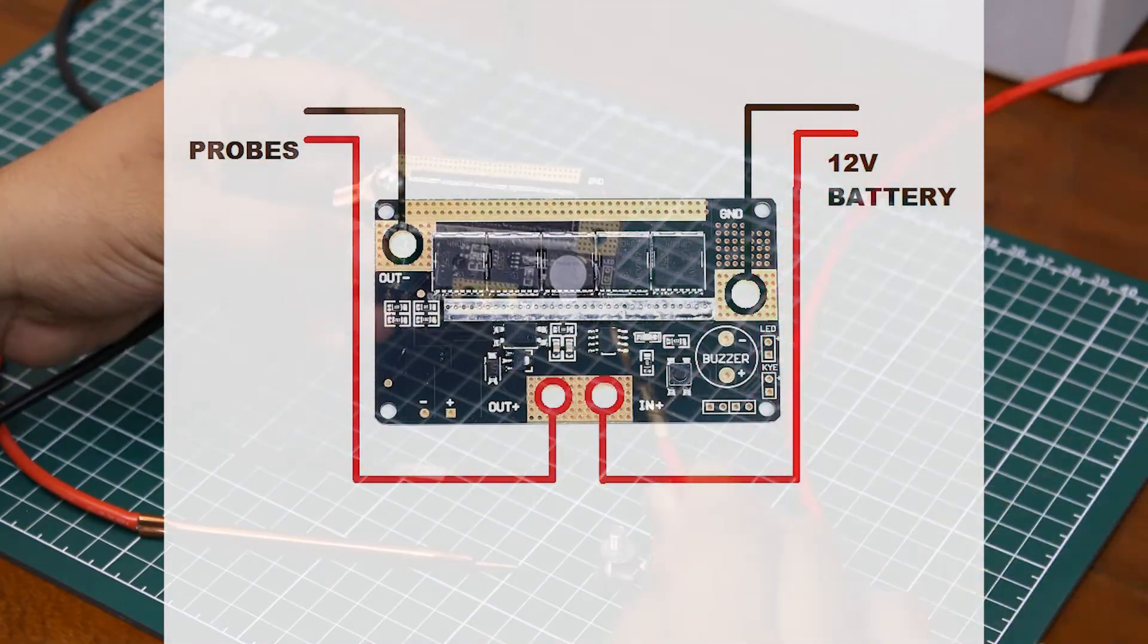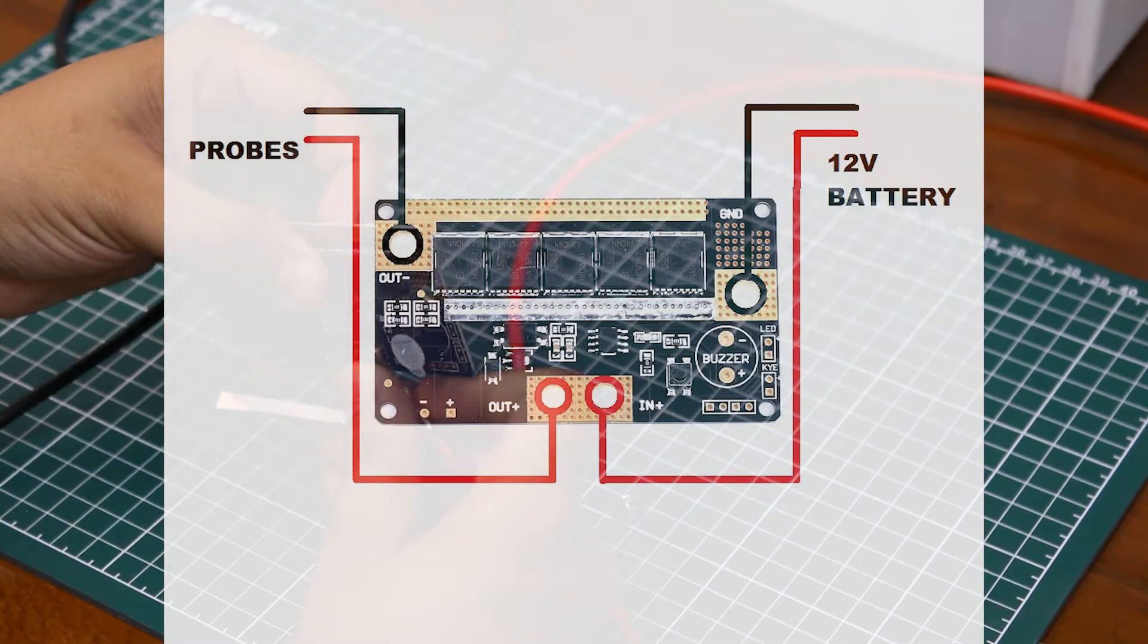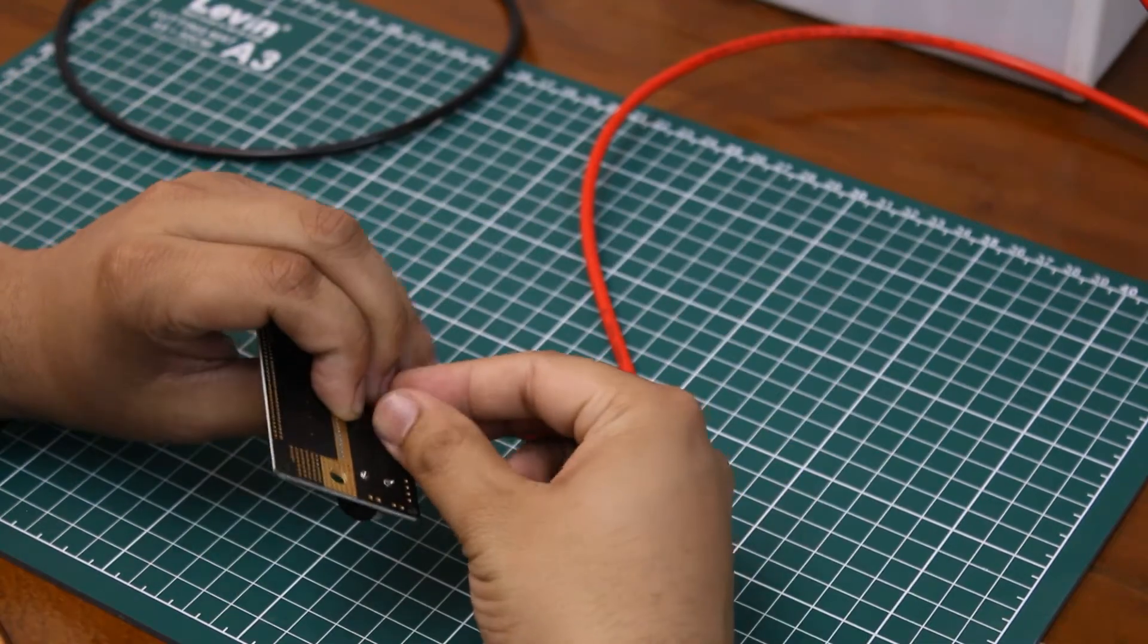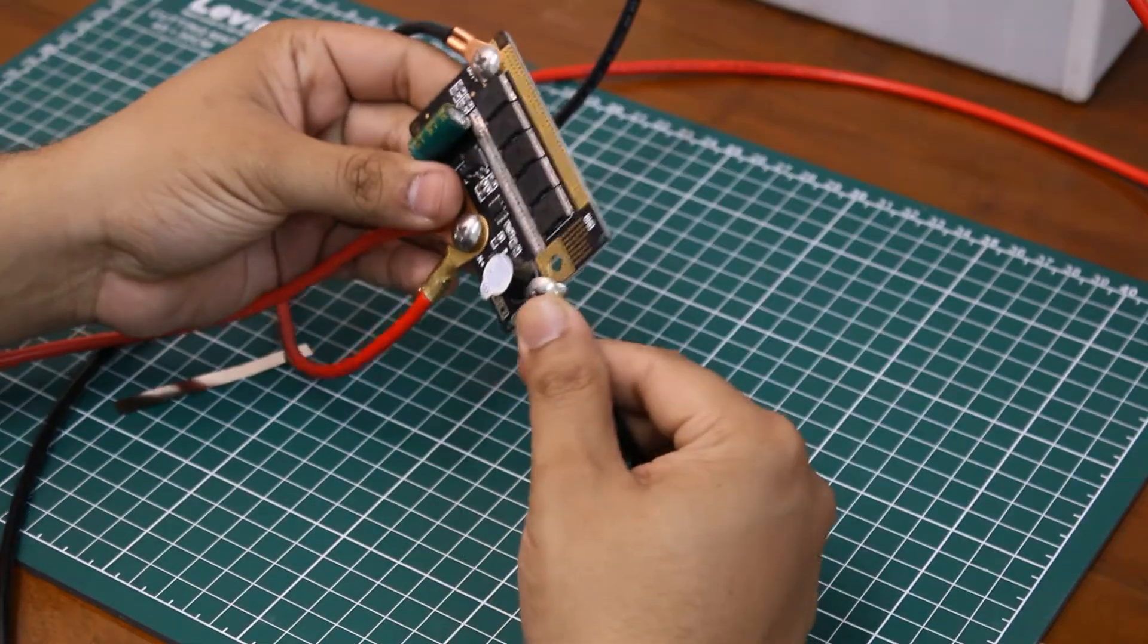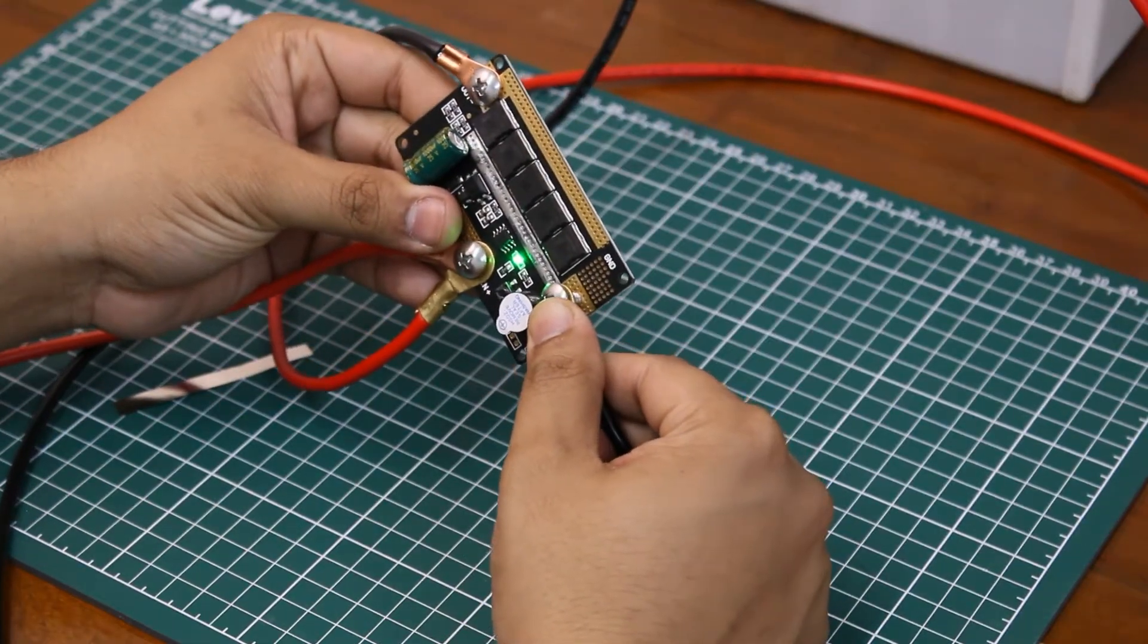Now connect the wires according to this diagram. Once the battery is connected, the green light should turn on.